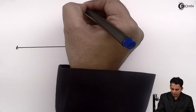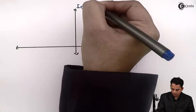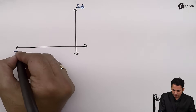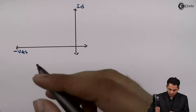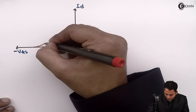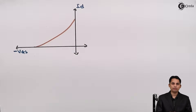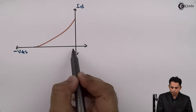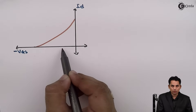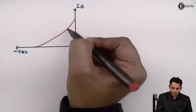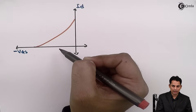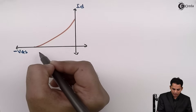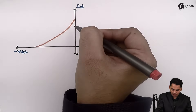The transfer characteristics of an N-channel JFET is a parabola-like curve. As VGS becomes more and more negative, the drain current starts decreasing. The transfer characteristics clearly show that as gate-to-source voltage increases negatively, drain current is decreasing.